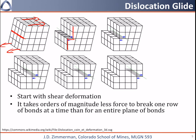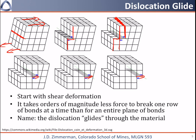If this progresses a little bit further, bonds have reformed and we now have this extra plane of atoms inserted into the crystal — this looks like our dislocation. If we continue to apply shear force to this material, this dislocation will continue to move: it moves over one step, then another, and then finally it exits the crystal. This motion is called glide.